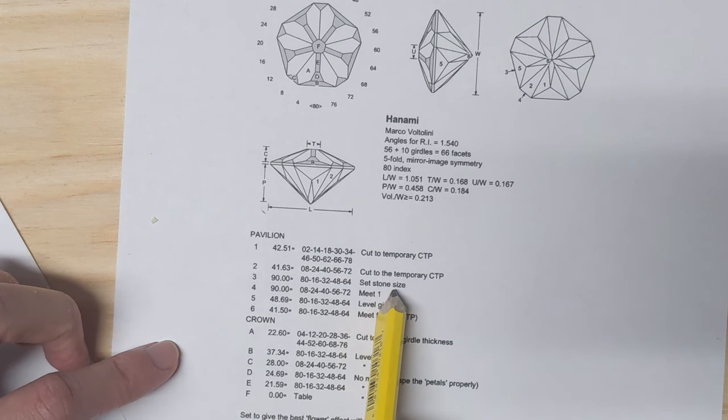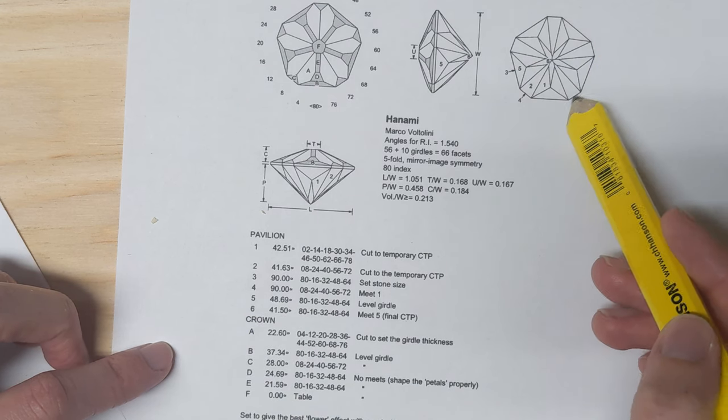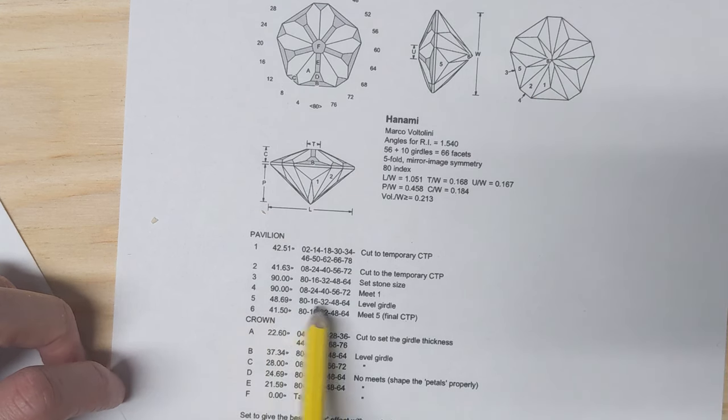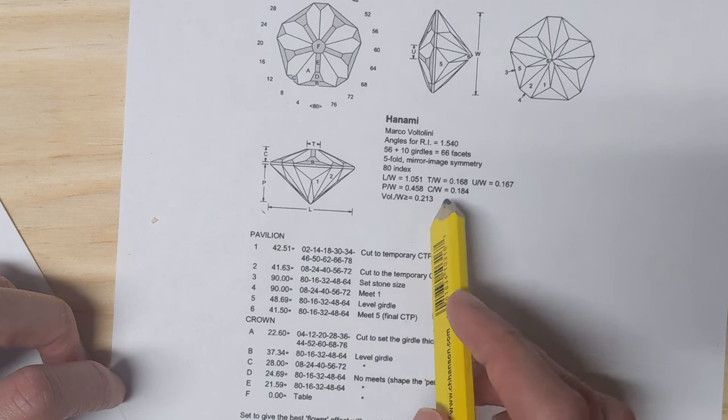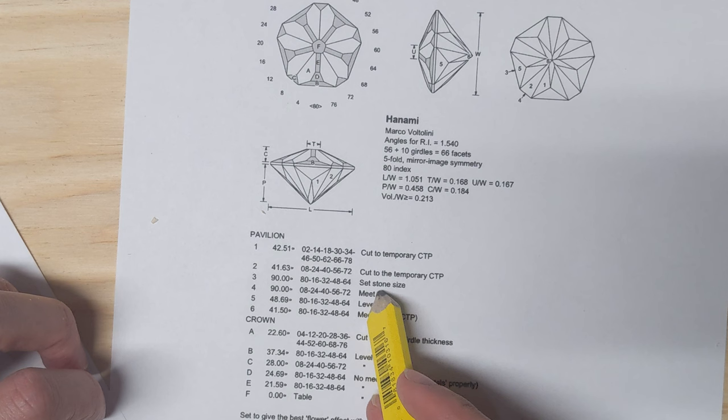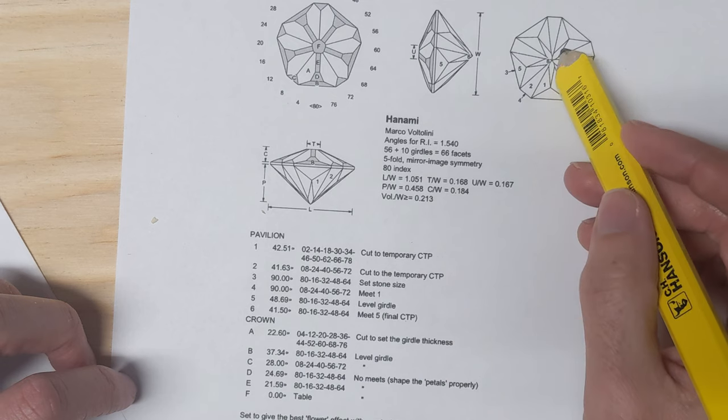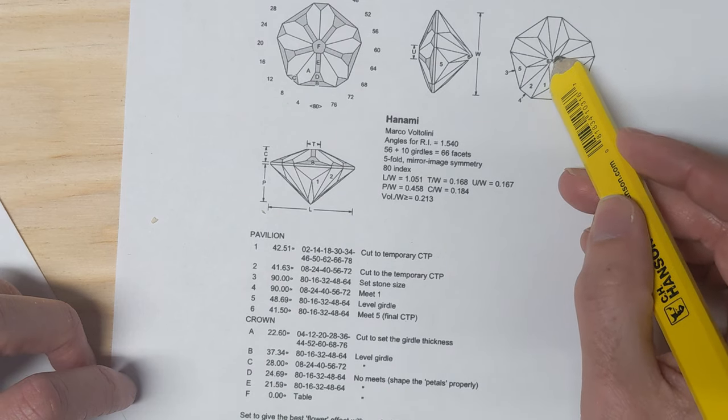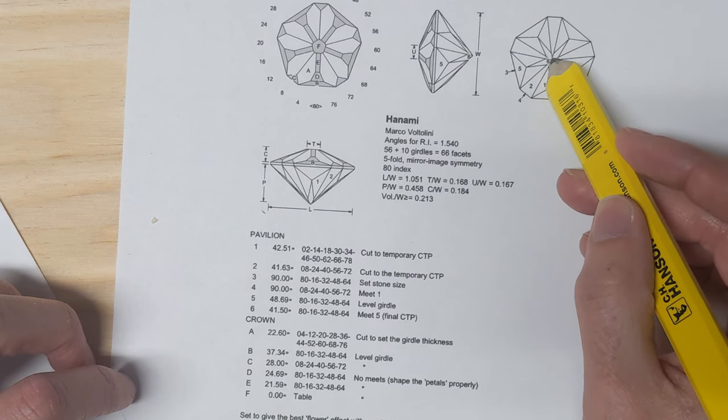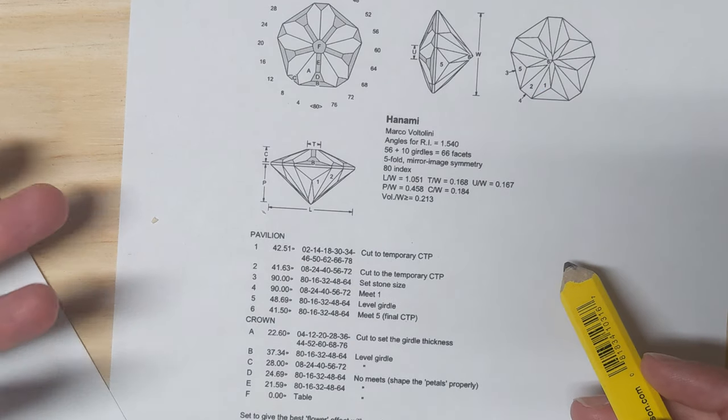Then you switch over to the girdle, set stone size, and then cut in the little nubs on the end there. Go back and level the girdle because it'd make kind of a stair-step pattern as you go around when you cut in these other girdles. Then 6, you'd meet 5 at the final center point. So that's the little star in the center here. This makes a new center point that'll be shallower than the previous center point, so it overrides it.